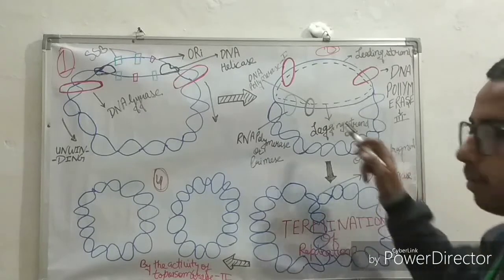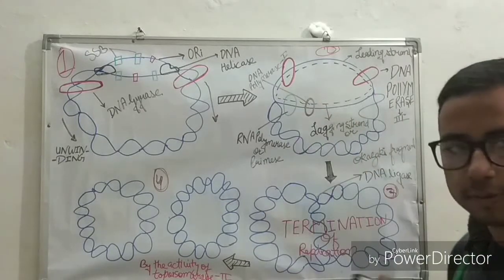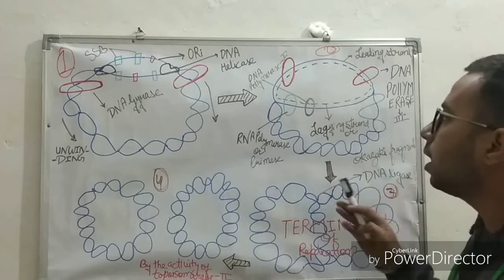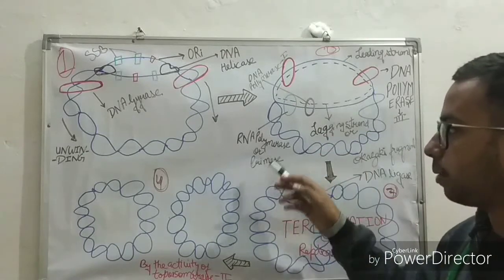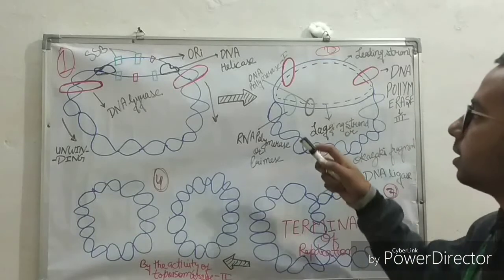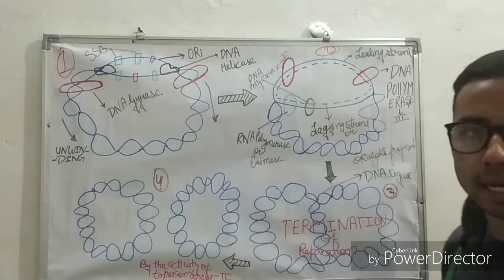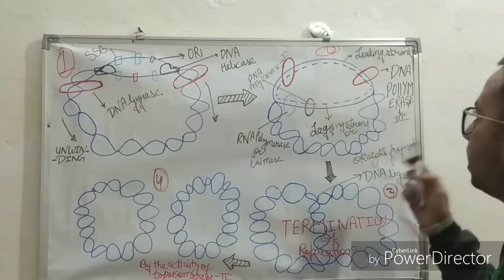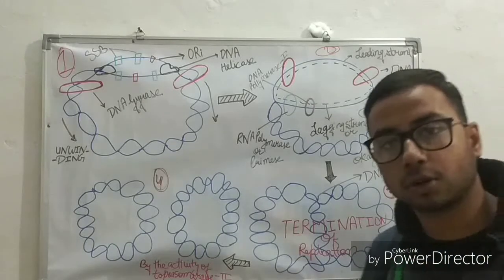After the synthesis of the lagging strand or Okazaki fragments or RNA primer, DNA polymerase first removes the RNA primer from the replication region and fills the gap between the RNA primers. After that, DNA polymerase comes into the main role.